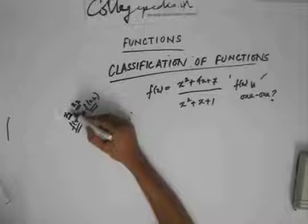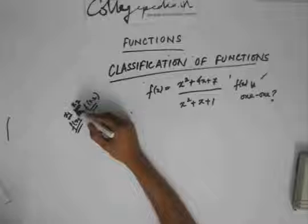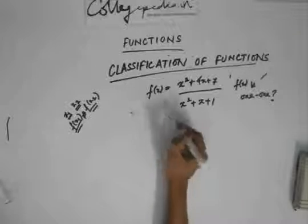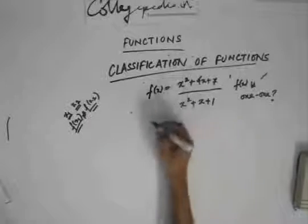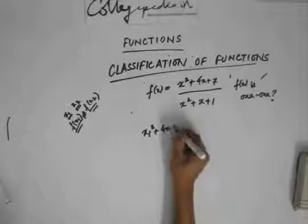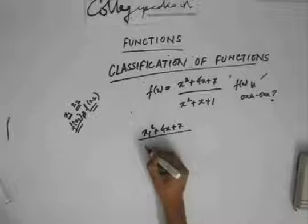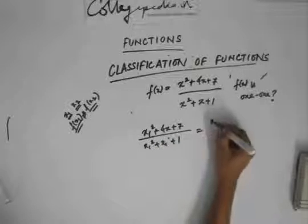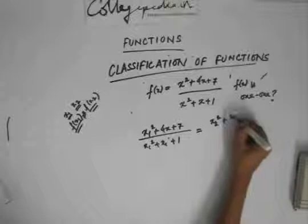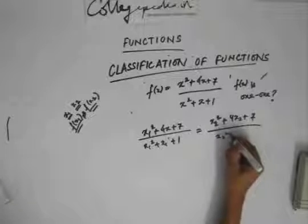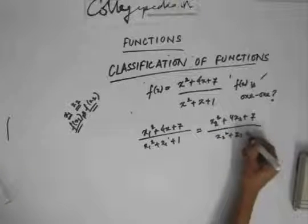We'll see. If I find that x1 and x2 are different but f of x1 and f of x2 are the same, then the function is not one-to-one — it's a many-to-one function. So I need to compute f of x1 and f of x2. On one side we get x1 squared plus 4x1 plus 7, and on the other side we get x2 squared plus 4x2 plus 7.